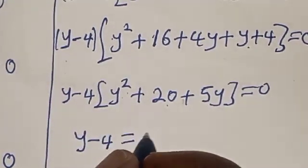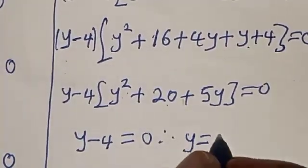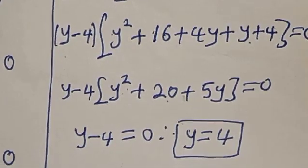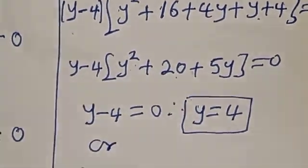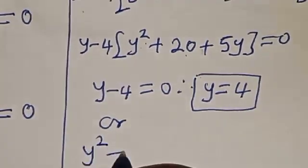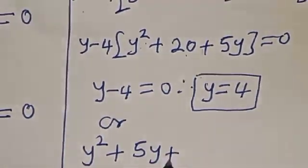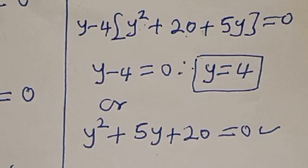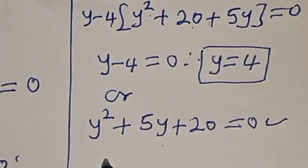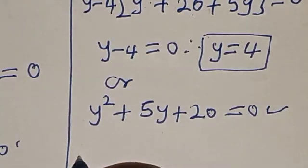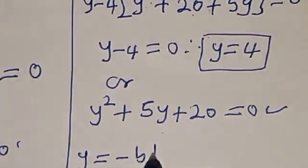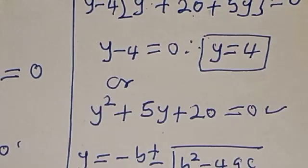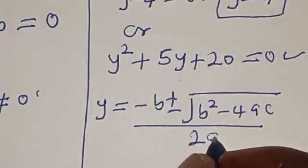From the first case, y minus 4 equals 0, therefore y equals 4 — that is one real value of y. For the second case, y squared plus 5y plus 20 equals 0. This is a quadratic equation which can be solved using the quadratic formula: y equals negative b plus or minus square root of b squared minus 4ac, divided by 2a.